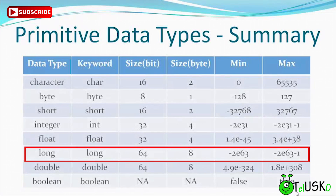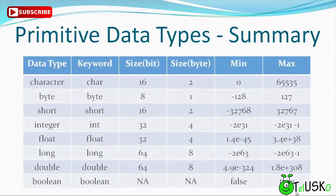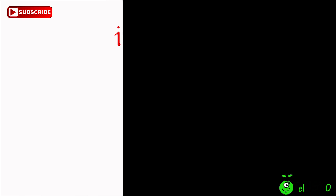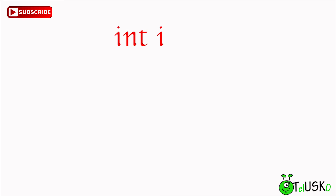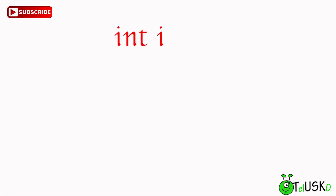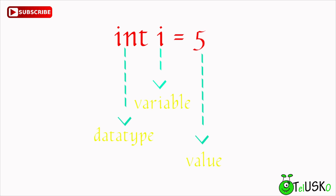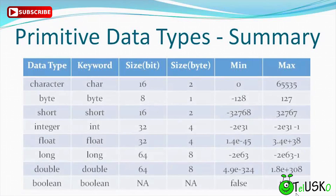We also have 'long' and several other data types. So int, float, and the rest are data types which define the type of the variable. When I say 'int i', then 'i' is the variable and 'int' is the data type. When I say 'int i = 5', five is the value, 'i' is the variable, and 'int' is the data type.